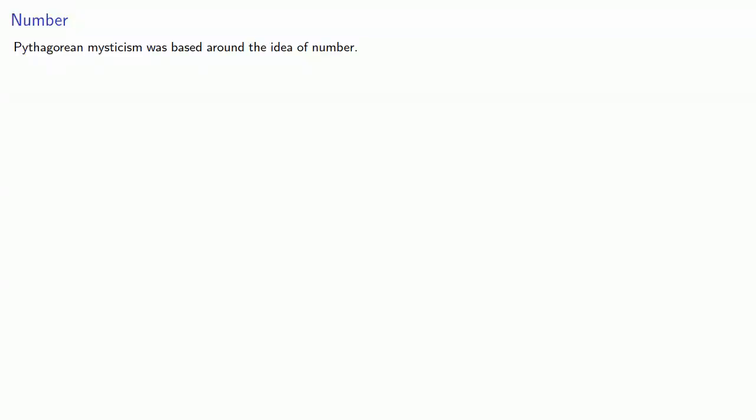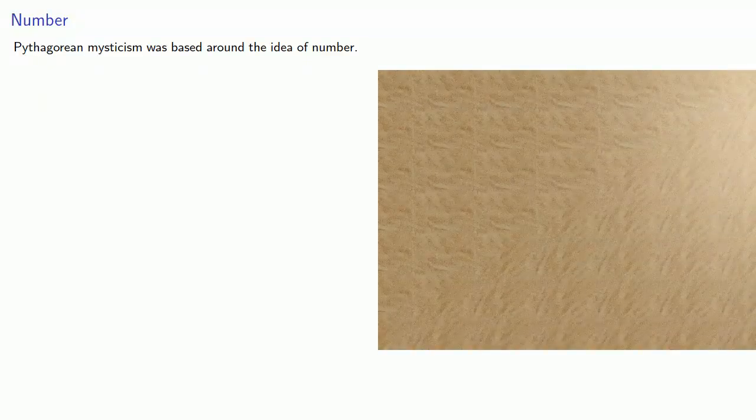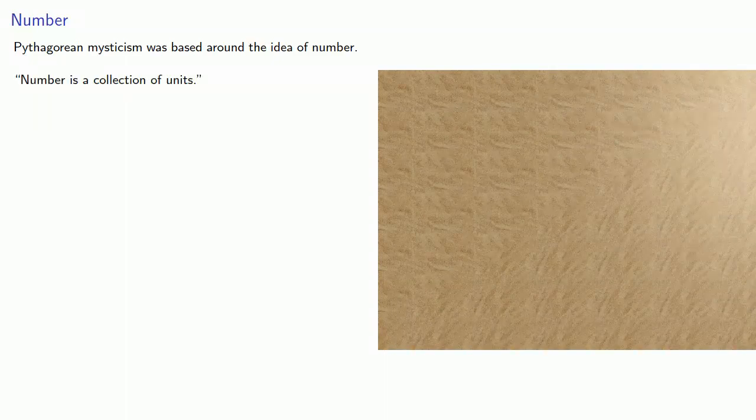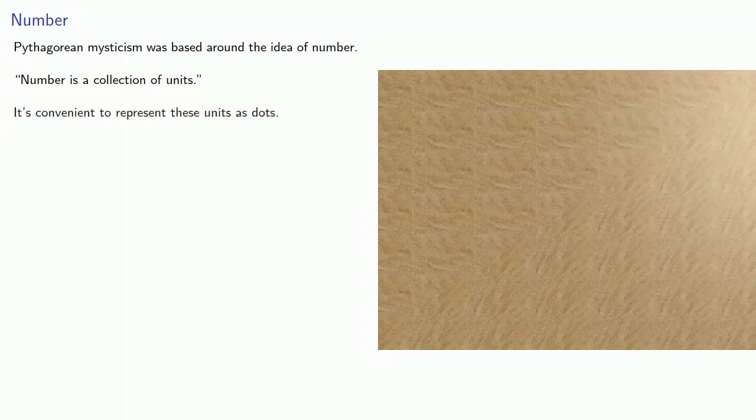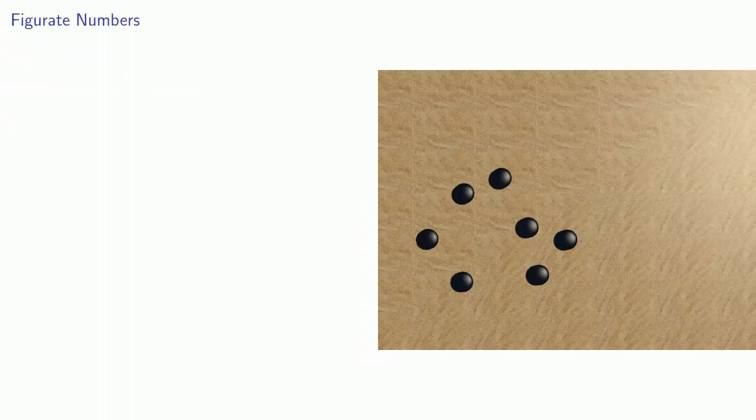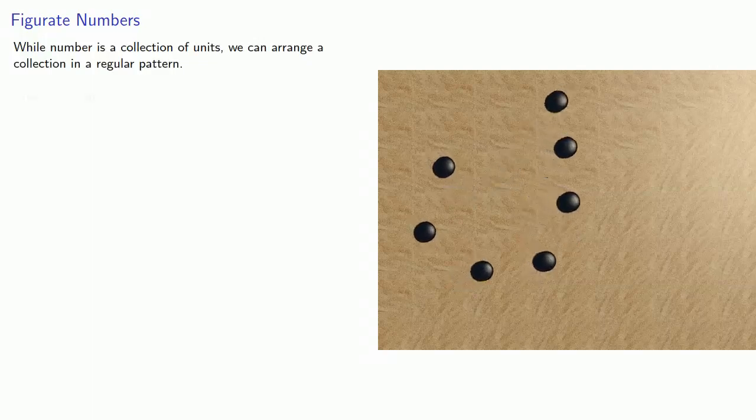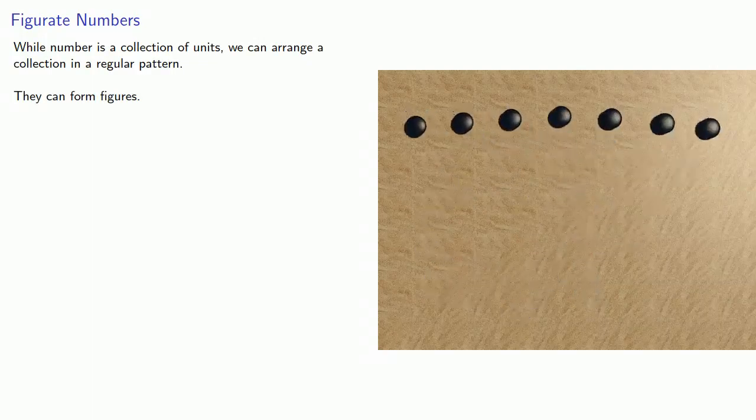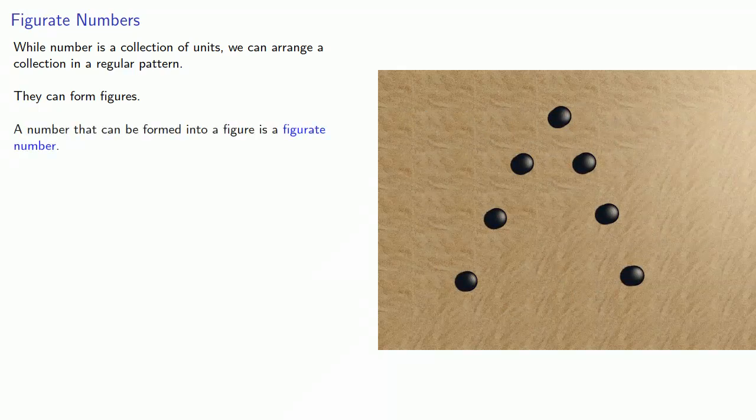Pythagorean Mysticism was based around the idea of number, which they defined as a collection of units. It's convenient to represent these units as dots. You can think about them as pebbles or something like that that you could manipulate. While number is a collection of units, we don't have to leave them in a disorderly pile. We can arrange a collection in a regular pattern. They can form figures. A number that can be formed into a figure is called a figurate number.